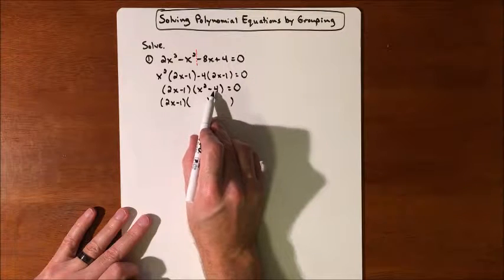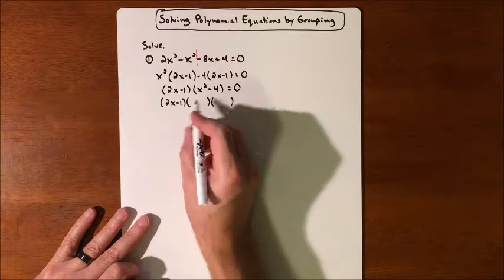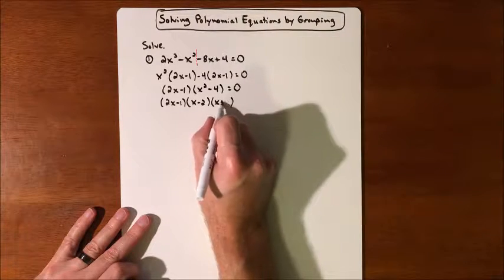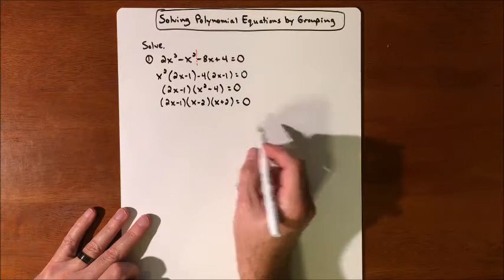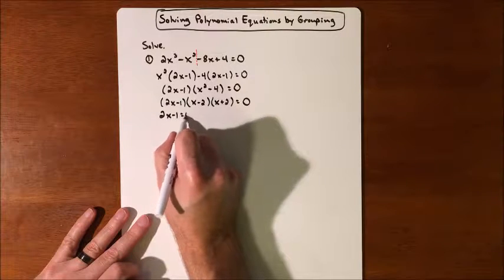So we need two terms that multiply to negative 4. We're missing a middle term, so they need to add up to 0. So that would be an x minus 2 and an x plus 2 equals 0. So we set each factor equal to 0.